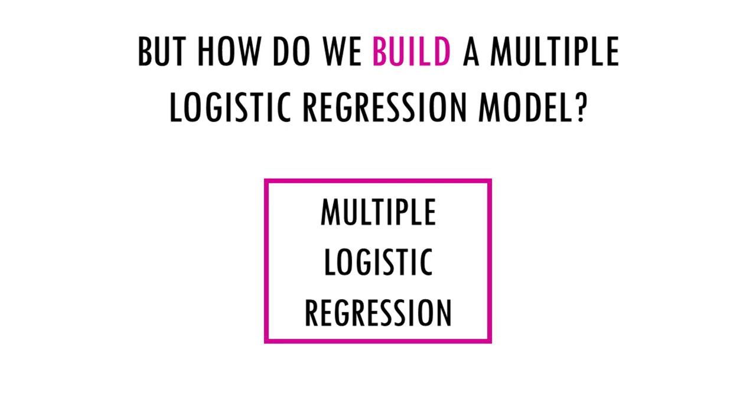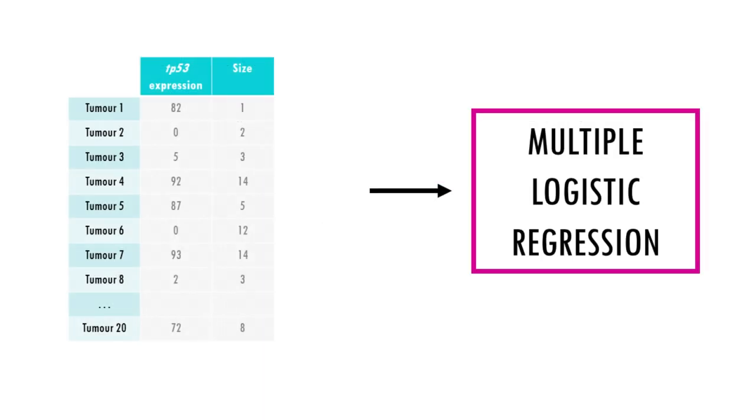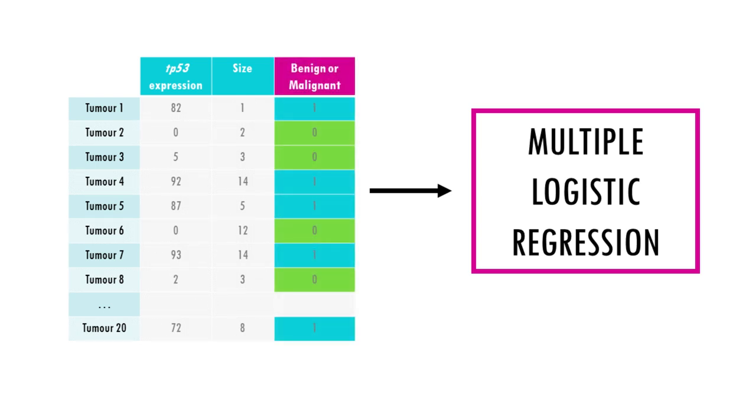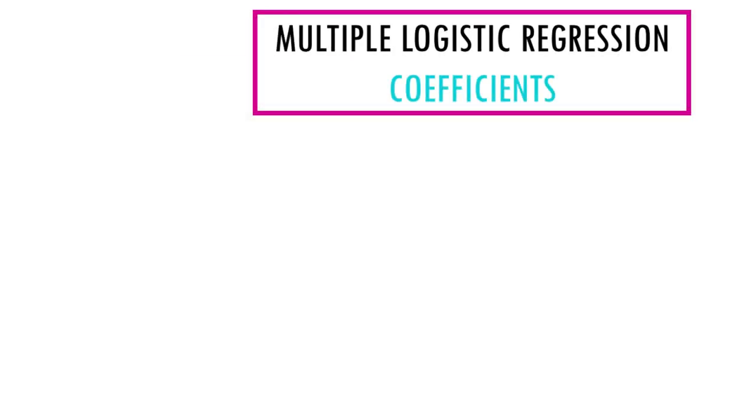Now, to build a logistic regression model, we need data. In particular, we need the sizes and TP53 status of many tumors. And we also need to know if those tumors are benign or not. That way our model can learn from our data. It will assign coefficients to our predictors based on its learning.